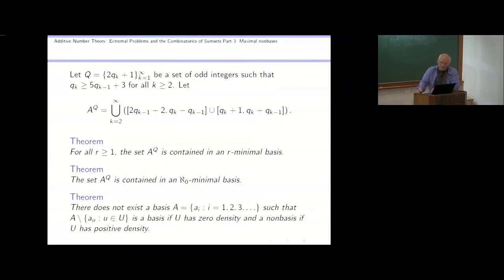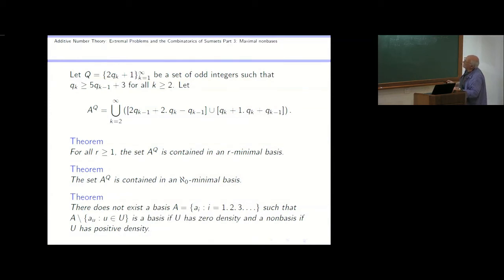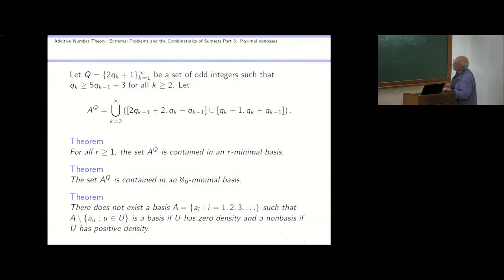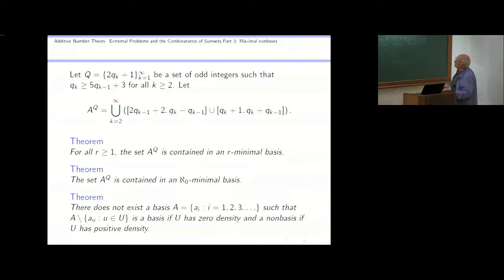All of these things can be constructed using my favorite set, which I constructed yesterday. We take a set of odd integers 2q_k plus one, where the q_k's grow exponentially fast satisfying a certain inequality. Then there's a set A_Q which is a union of intervals — square brackets denoting the interval of integers from one endpoint to another. This union of intervals is the set A_Q, and it has some remarkable properties that let you construct all sorts of curious things. For example, for any r, you can expand this set a little bit and get an r-minimal basis.